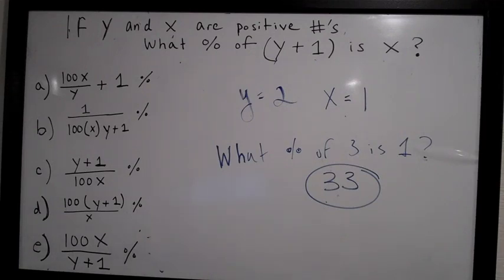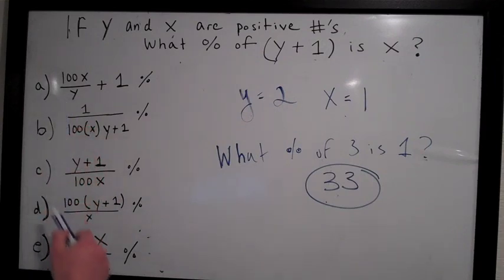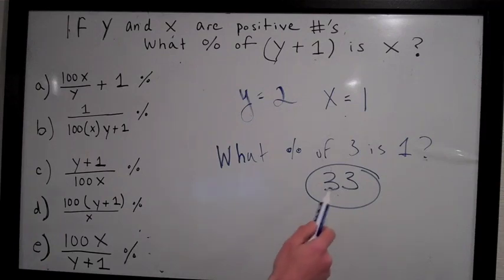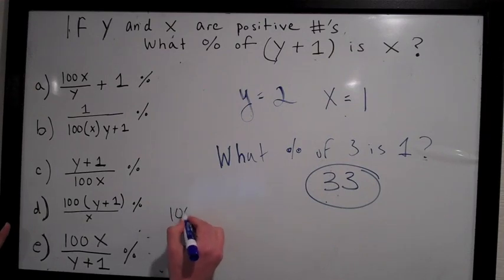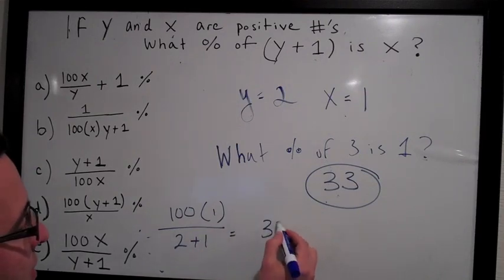As a shortcut, if you plug in your numbers in A, B, C, and D, these equations won't give you 33. But if you go to E, which is 100x over y plus 1, let's solve it. 100x is 100 times 1, over 2 plus 1, which is 3. So 100 over 3 is 33.